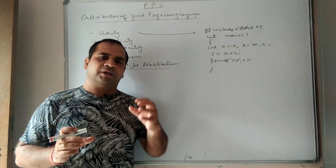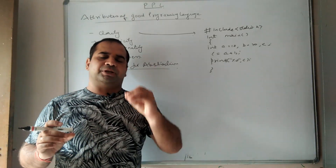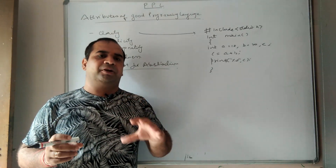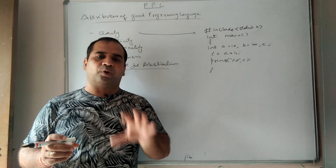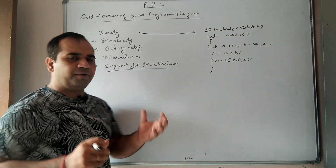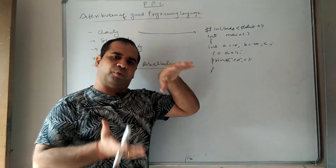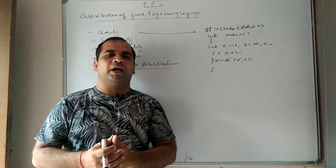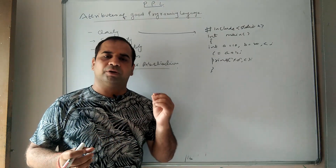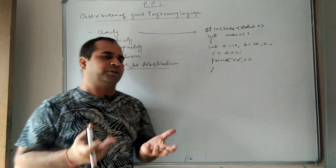The concept is that clarity means when we have clear, step-by-step instructions given in the execution of a program. Any language which produces step-by-step instructions for a particular program is said to have a clear programming construct. This is the concept of clarity.